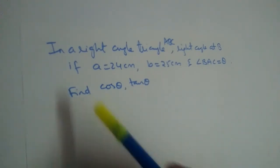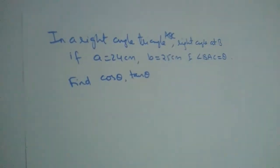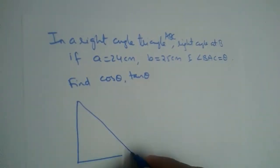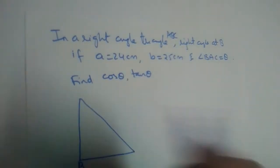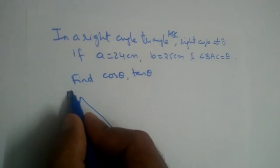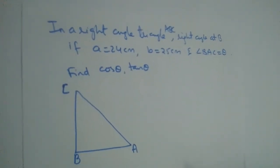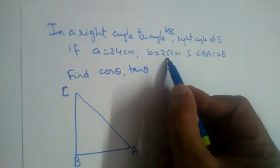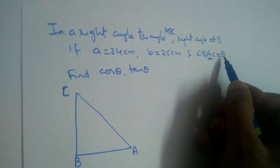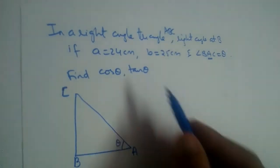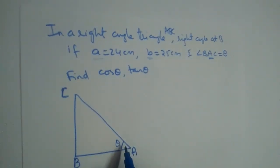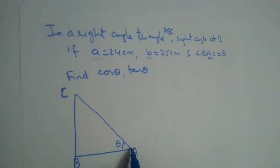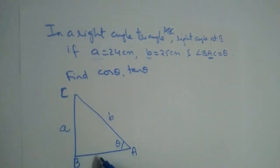We have one more question: in a right angle triangle ABC, the right angle is at B. Let us draw the diagram with A, B, and C. Small a is 24, small b is 25, and angle BAC is theta. In geometry, the convention is that small a is the side opposite to vertex A, small b is opposite to vertex B, and small c is opposite to vertex C.